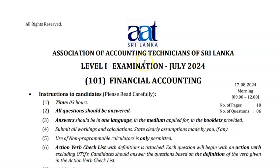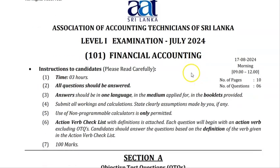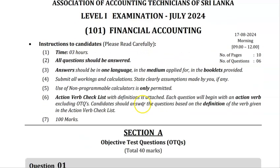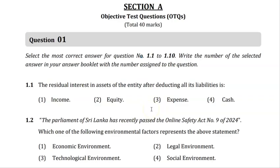Hello everyone, welcome to Olive's Academy. Today we are going to discuss the past paper for AAT Sri Lanka. This is the Level 1 examination for July 2024 — Financial Accounting. It is a three-hour paper with three parts: Section A, Section B, and Section C. We are going to start with Section A, which contains OTQ (Objective Test Questions) carrying 40 marks in total.